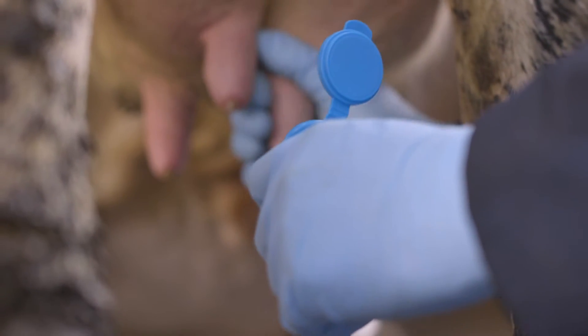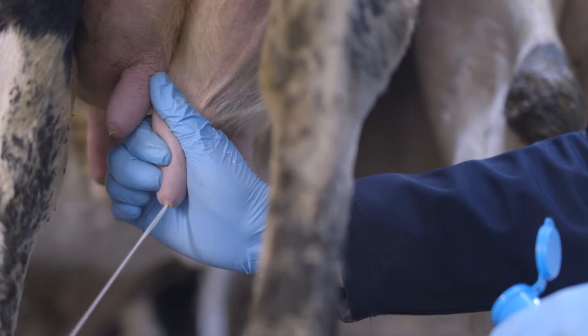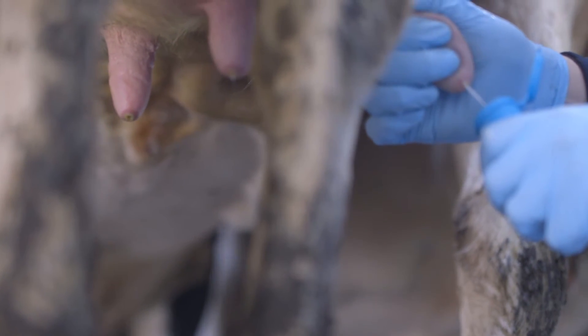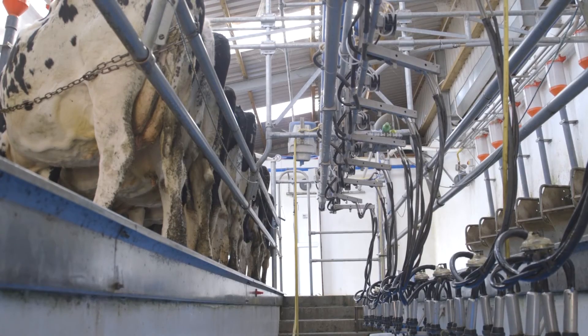Open the sterile sample bottle at the last minute just before taking the sample. Before taking the sample, discard two draws of milk onto the ground and place the third into the sample bottle, ensuring no contamination. Only a small sample of milk is required and it's not necessary to fill the bottle.